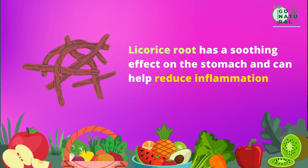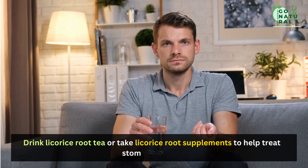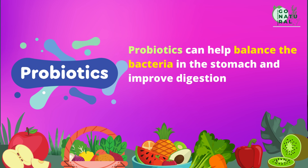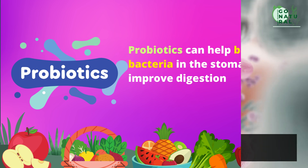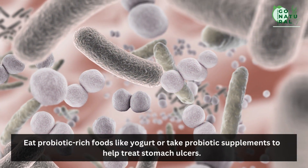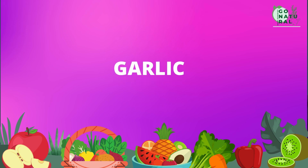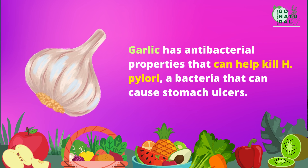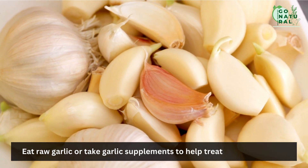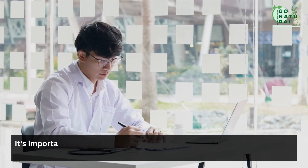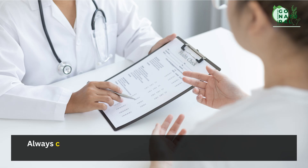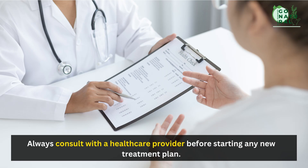Licorice root — licorice root has a soothing effect on the stomach and can help reduce inflammation. Drink licorice root tea or take licorice root supplements to help treat stomach ulcers. Probiotics — probiotics can help balance the bacteria in the stomach and improve digestion. Eat probiotic-rich foods like yogurt or take probiotic supplements. Garlic — garlic has antibacterial properties that can help kill H. pylori, a bacteria that can cause stomach ulcers. Eat raw garlic or take garlic supplements. It's important to note that while these home remedies may help alleviate symptoms, they are not a substitute for medical treatment. Always consult with a healthcare provider before starting any new treatment plan.